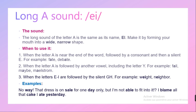Also use /eɪ/ when the letter A is followed by another vowel, including the letter Y — for example: 'fail', 'mail'. Or when the letters EI are followed by a silent GH — for example: 'wait', 'neighbor'. Listen for the sound /eɪ/ in: wait, neighbor.